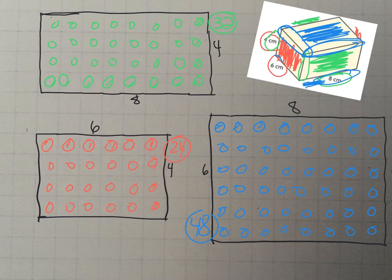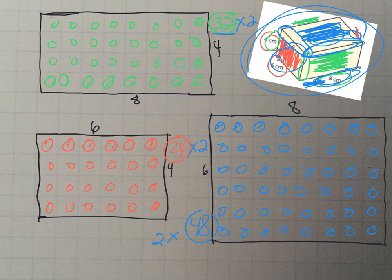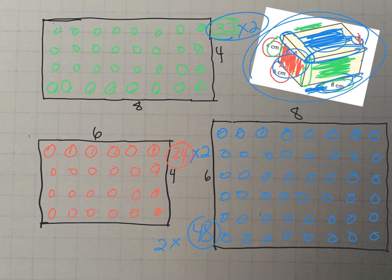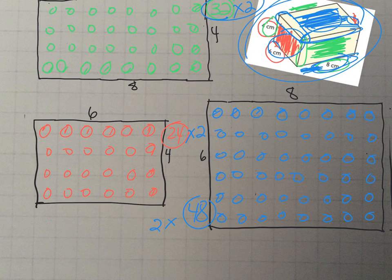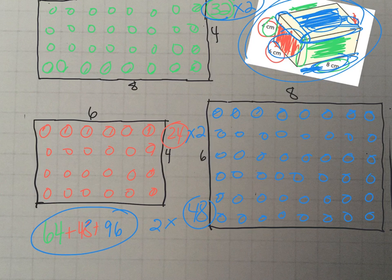Remember, there are two of each color — two blues, two reds, two greens. So that's 32 times 2, 24 times 2, and 48 times 2. The greens give 64, the reds give 48, and the blues give 96. Adding those together: 64 plus 48 plus 96 equals 208. So the surface area is 208.